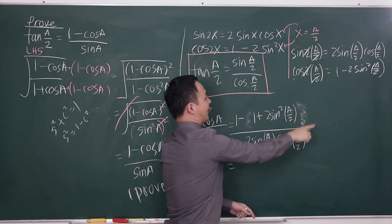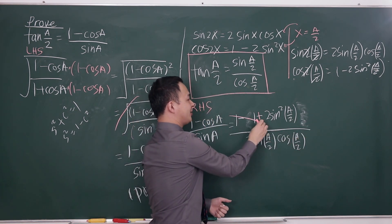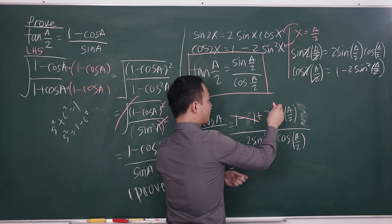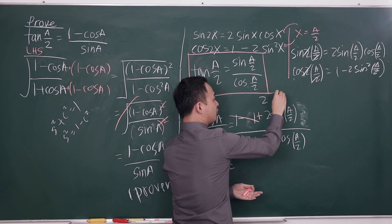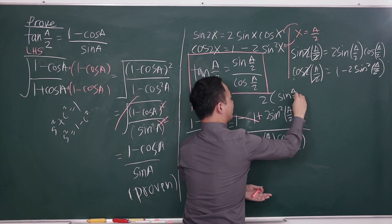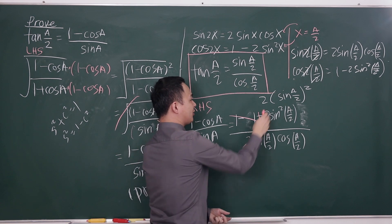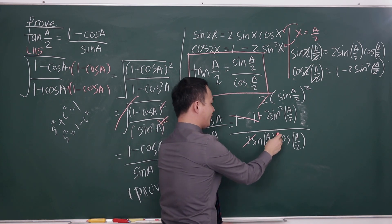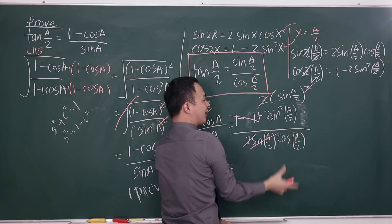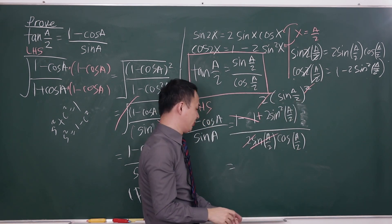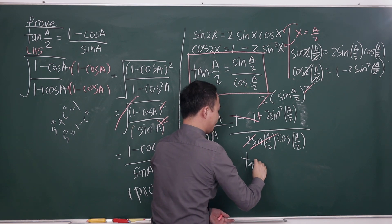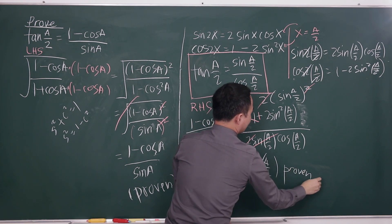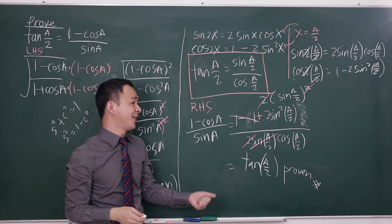2 sine squared (a/2) is the same as 2 times sin(a/2) squared. The 2 in the numerator and 2 in the denominator cancel, and one factor of sin(a/2) cancels as well, leaving sin(a/2) over cos(a/2) — which is tan(a/2). Proven.